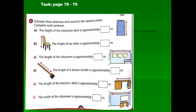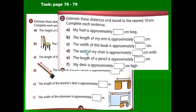Here is a practice task. Number one: estimate these distances and round to the nearest meter and 10 centimeters. You can use objects in your house — the height of the door, your chair, your room, your brush, your table. Complete it and round to the nearest meter and 10 centimeters. Number two is personal: measure your foot, the length of your arm, the width of a book, the seat of your chair, the length of your pencil, and your desk. You can do all of this at the comfort of your home.